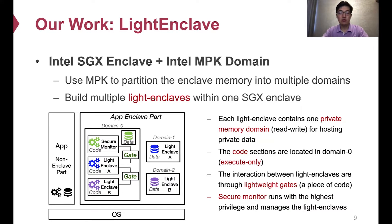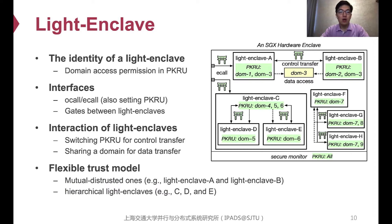The interaction between two light enclaves is through a lightweight gate, which is a piece of code for changing the control flow as well as the memory access permission. Each hardware enclave contains a secure monitor. As its name indicates, the secure monitor is considered trustworthy and can access all the memory domains. It works as a manager — for example, creating light enclaves on the fly. The domain access permissions of a light enclave is its unique identity. We ensure that the PKRU register always stores its identity during the light enclave's execution and thus prevents it from accessing other domains.